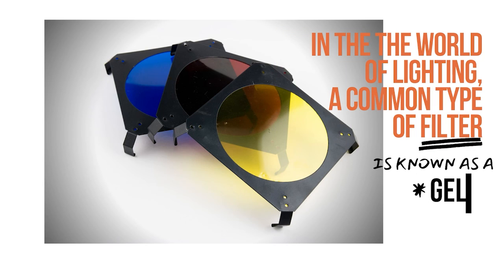In the world of the theater, we use actual physical filters that are basically thin sheets of plastic that we put in front of the light. These are called gels. Whatever color the gel is, is also the color that passes through — all the others get absorbed. A white light with a blue gel in front of it can only make things look blue, no matter what color they normally appear under white light.